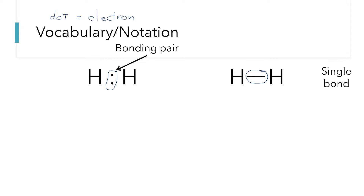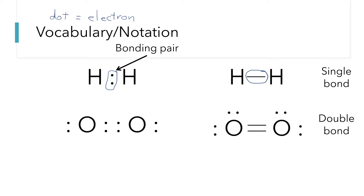In place of those two dots we can also draw one line, as shown in the structure on the right. This one line is equivalent to two dots when drawn between two atoms, and that is referred to as a bonding pair. If there is one pair of electrons shared, we call that a single bond.